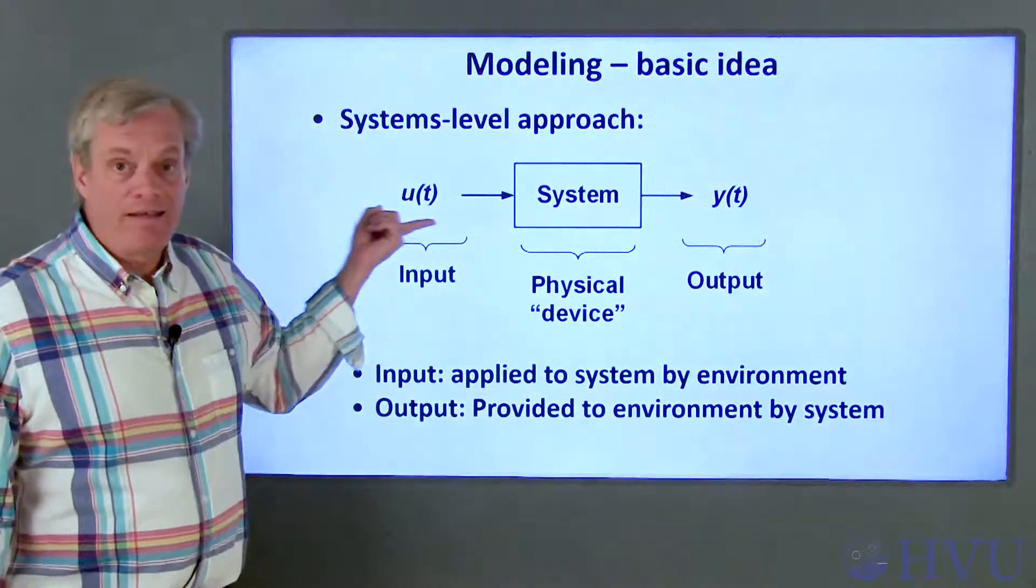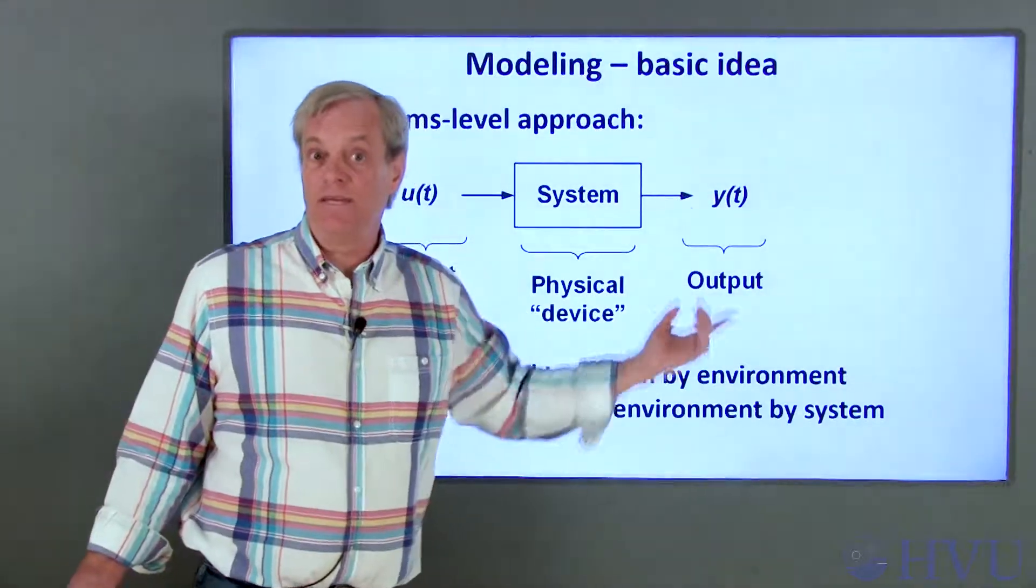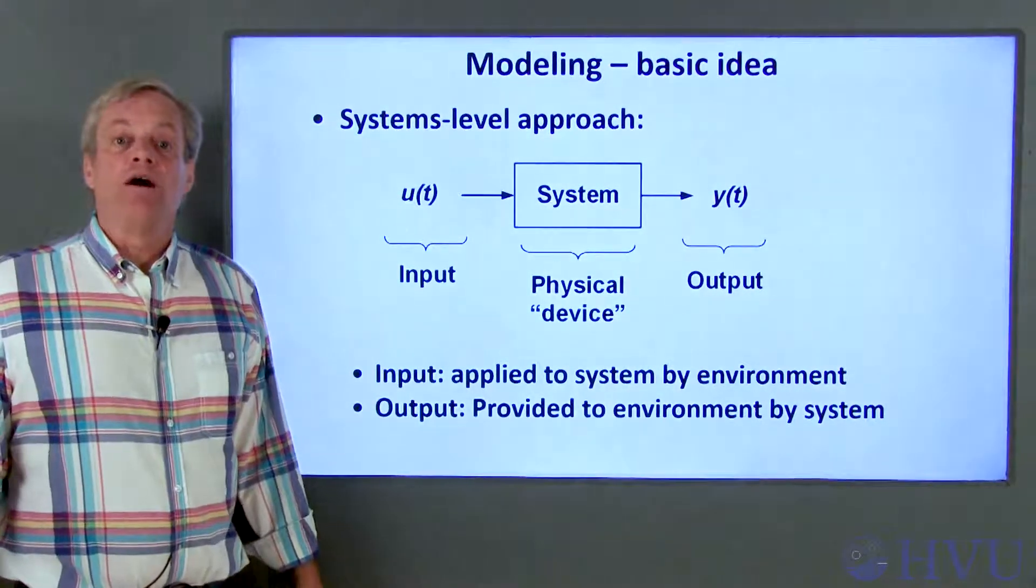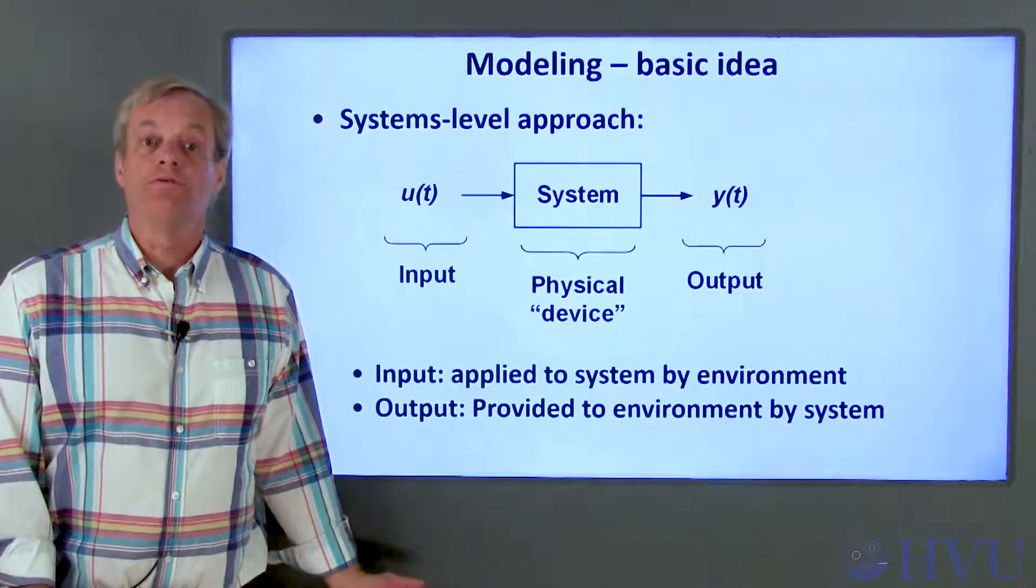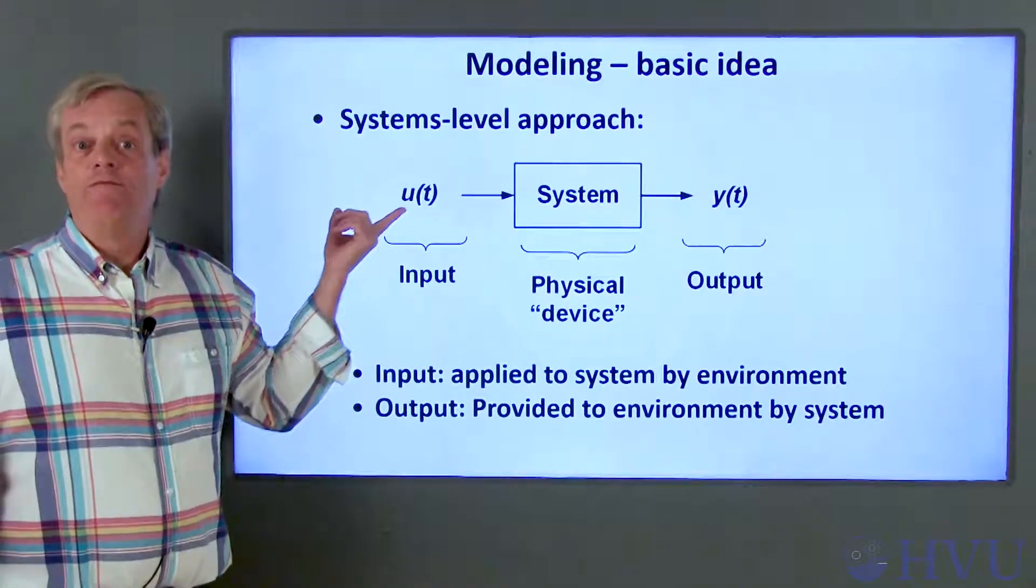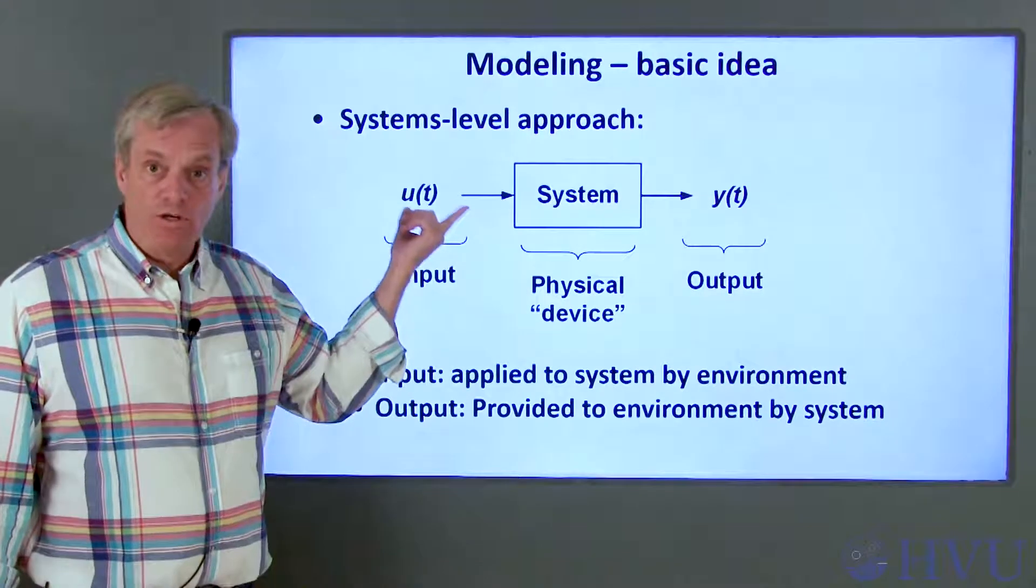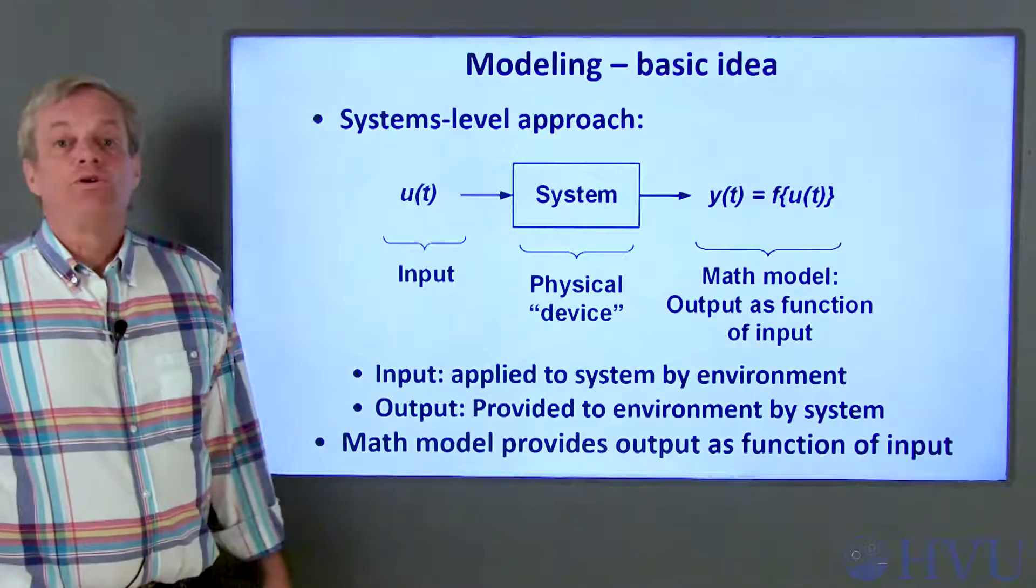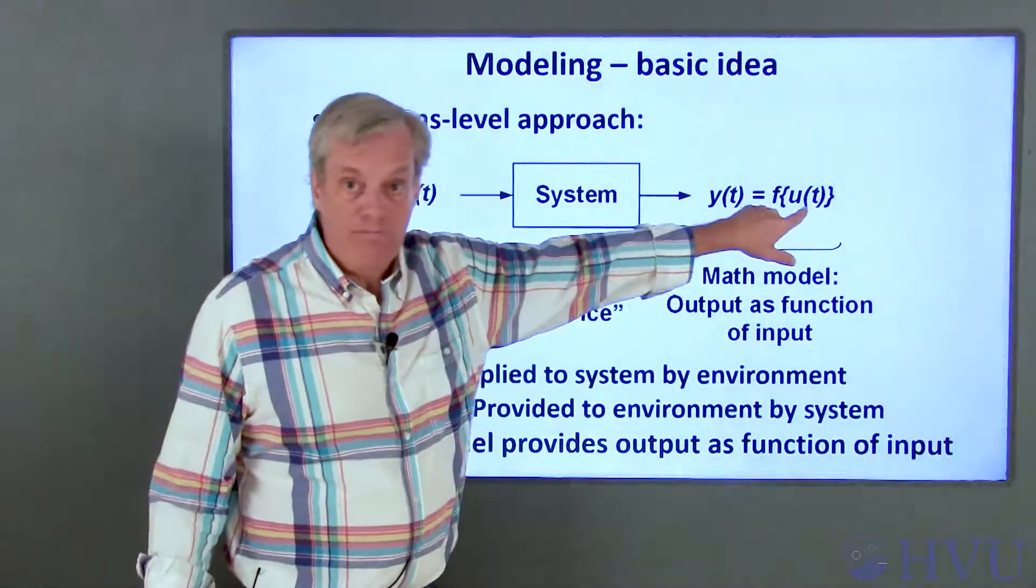So you can deflect the gas pedal as an input to the car and the car responds by changing its speed. The inputs and outputs are not unique. As an engineer, you can define them pretty much however you want to. An alternate input to the car could be the slope of the road. If you're going uphill, the car will slow down and it'll speed up if you're going downhill. When you create a model of a system, you're determining the output as a function of the input.